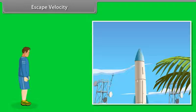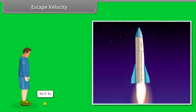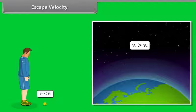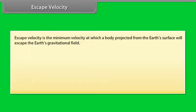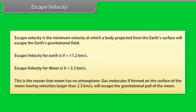Escape velocity. Can we throw an object with such high initial speed that it does not fall back to the earth? Yes, if we throw an object with escape velocity, it does not fall back to the earth. Escape velocity is the minimum velocity at which a body projected from the earth's surface will escape the earth's gravitational field. Escape velocity for the earth is v = 11.2 km/s. Escape velocity for the moon is v = 2.3 km/s. This is the reason that the moon has no atmosphere — gas molecules with velocities larger than 2.3 km/s will escape the gravitational pull of the moon.